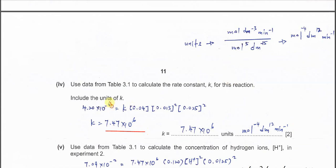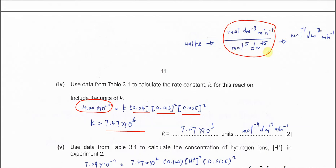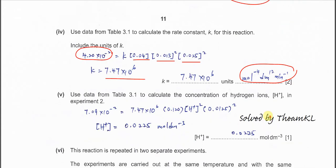For the units of k: the rate is in mol dm⁻³ min⁻¹. Bringing all concentration terms to the denominator, you divide by mol⁵ dm⁻¹⁵, giving units of mol⁻⁴ dm¹² min⁻¹. Write the full value with units: k = 7.47 × 10⁶ mol⁻⁴ dm¹² min⁻¹.